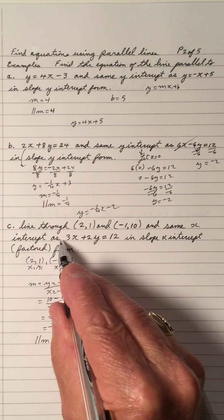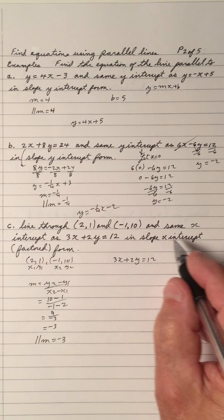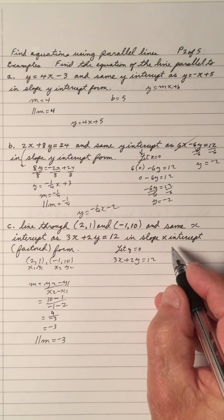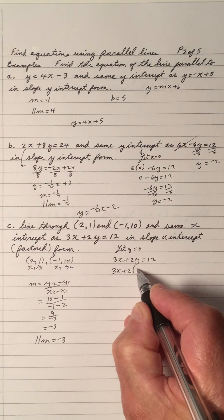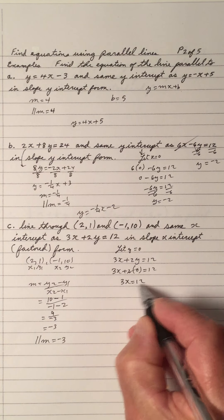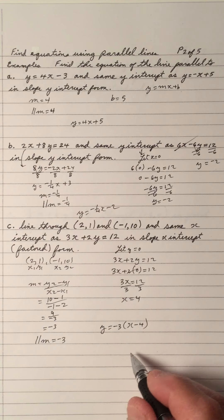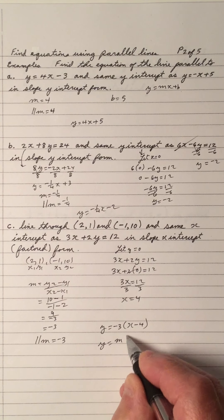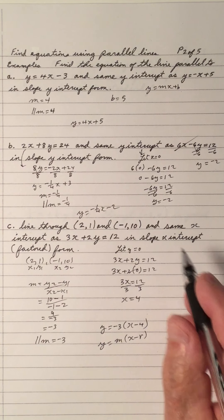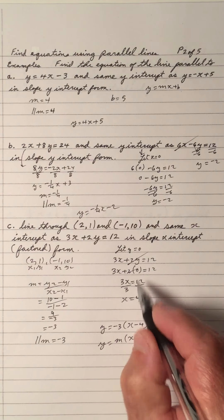The slope of the parallel line is also negative 3. It has the same x-intercept as this one. For 3x plus 2y equals 12, we let y equal 0 to find the x-intercept. This becomes 0, so 3x equals 12. Divide by 3, so x is 4 — that's the x-intercept. We want it in slope x-intercept form, so y equals negative 3 times x minus 4. The factored form is m times x minus r. If you want the x-intercept fast, cross out the y term and solve directly.